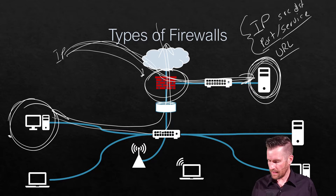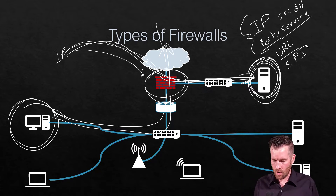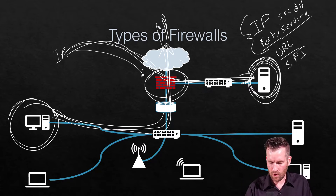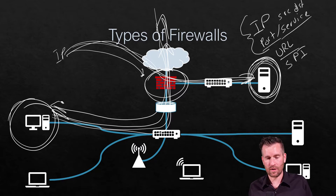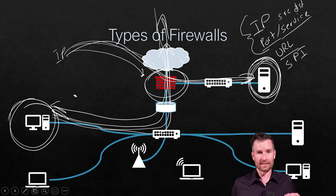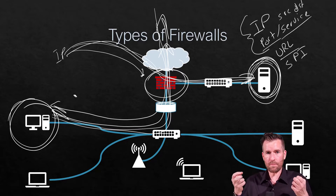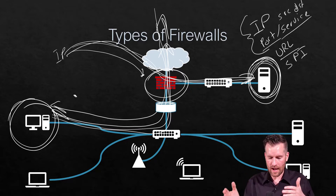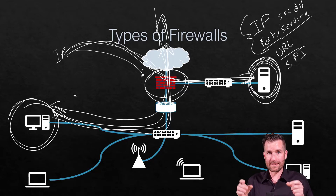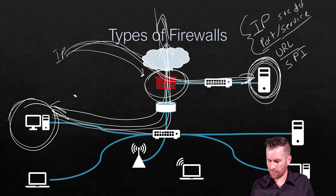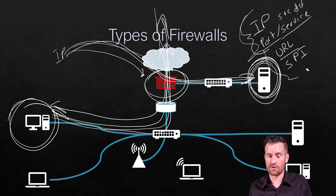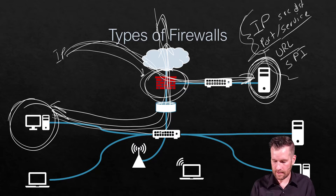Another option is stateful packet inspection. A stateful packet inspection identifies traffic going out and allows the return traffic back in through the firewall. It actually opens up the packets and looks inside them to identify if there's any kind of malicious activity. These are different ways a firewall can perform inspection or filtering on the front end of your network.